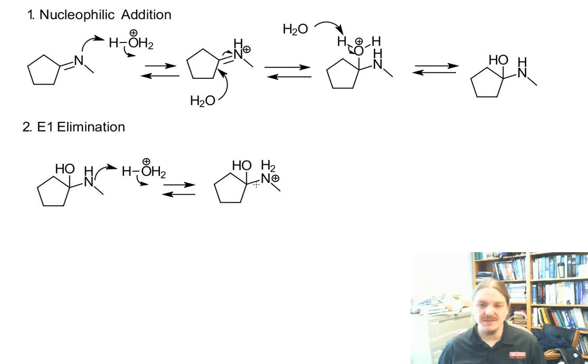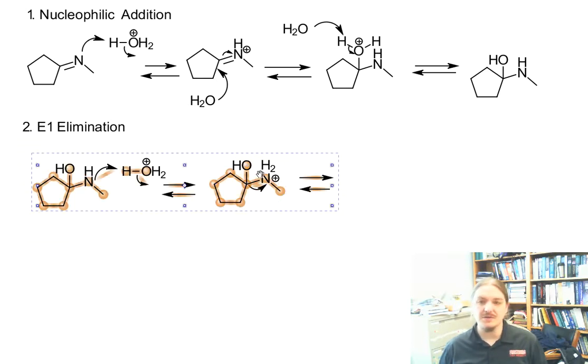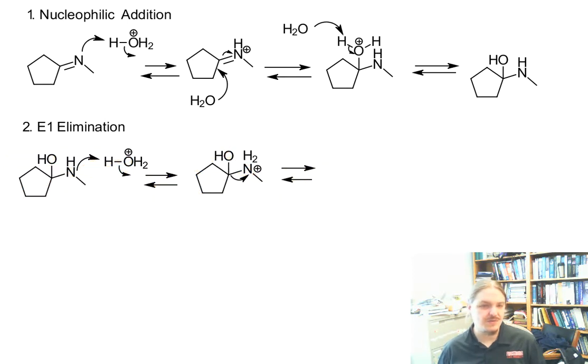And the next step, since this is an E1 elimination reaction, is loss of leaving group. So there we go. And draw the carbocation intermediate. It's also worth noting that some people will show mechanisms like this, like a lone pair on the oxygen helping that leaving group out. I think I'm going to draw it this way.